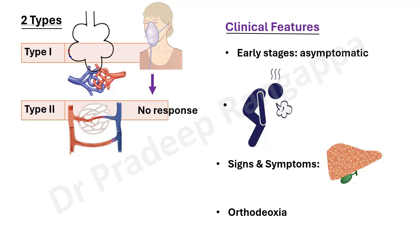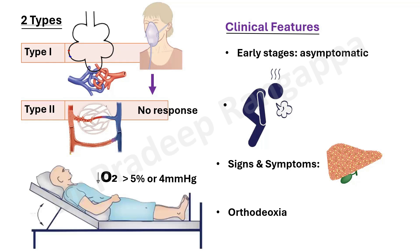Orthodeoxia is a simple bedside tool. If there is a drop in oxygenation of more than five percent, or a four mmHg drop in PaO2 when the patient moves to the erect position, we call it orthodeoxia. We have seen this in the ICU — when we prop up patients, they tend to get hypoxemia. Orthodeoxia also tends to worsen with increasing severity of hepatopulmonary syndrome.